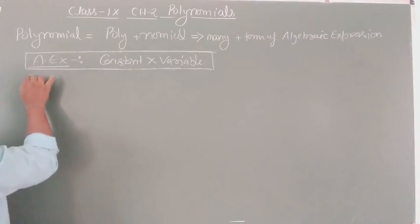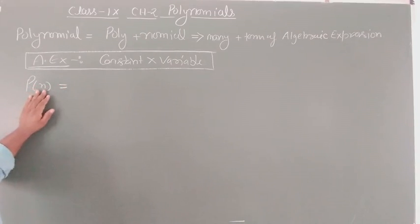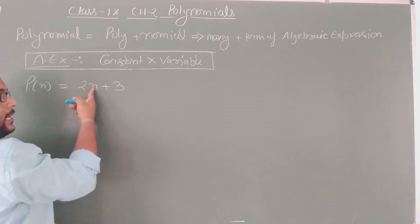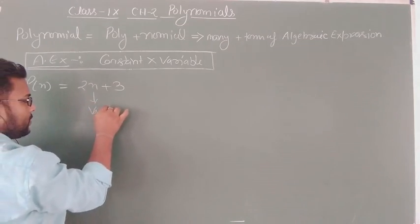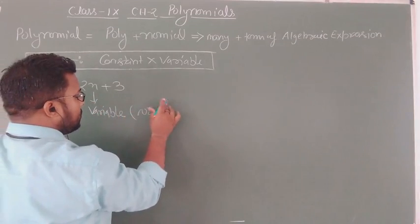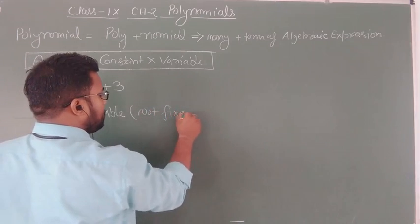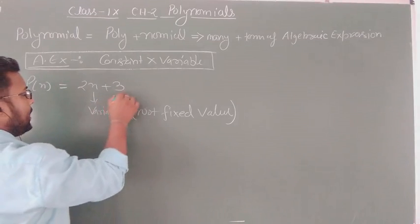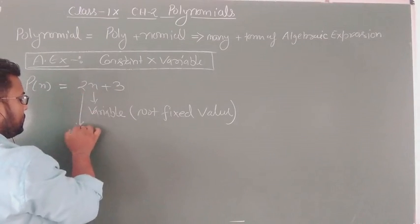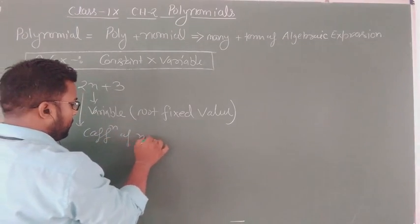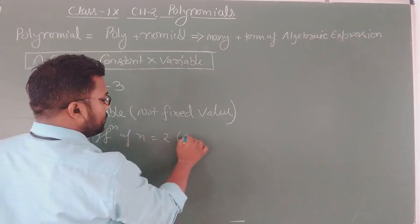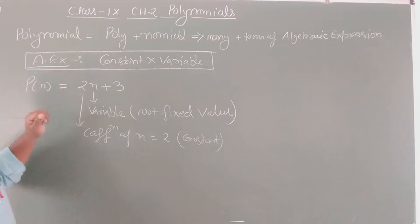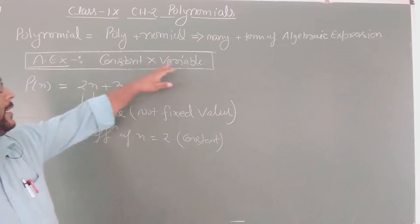For example, a polynomial is denoted by P(x). P(x) is equal to 2x plus 3, where x is the variable. A variable is a non-fixed value, while a constant is a fixed value. Here, 2 is the constant multiplied by variable x, and 3 is also a constant. So the algebraic expression P(x) = 2x + 3 is denoted as constant into variable.